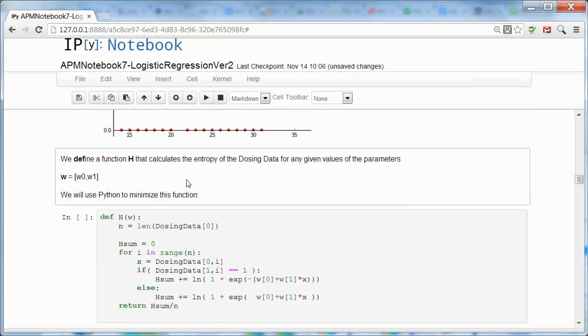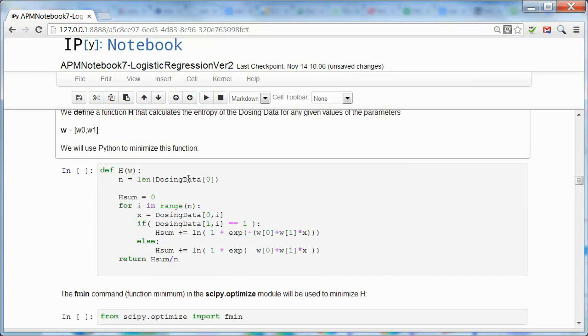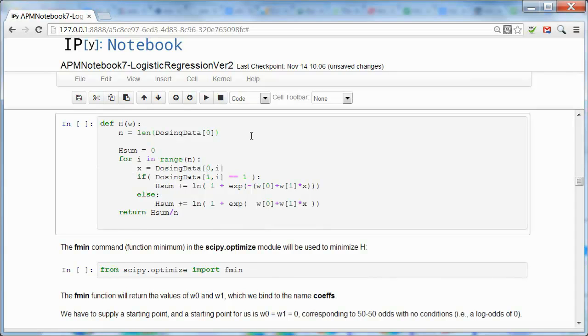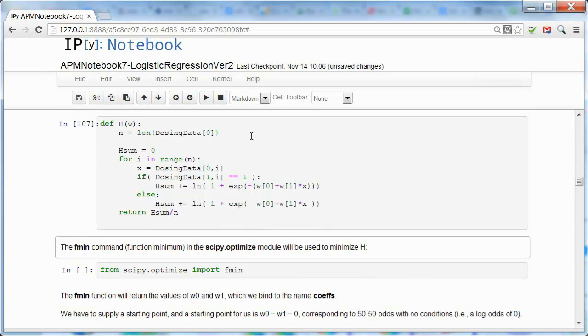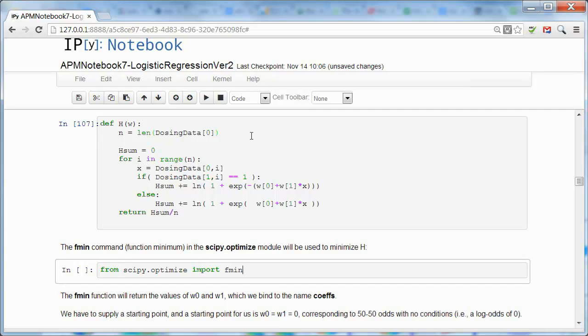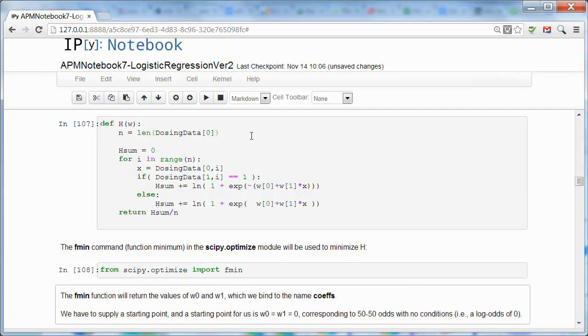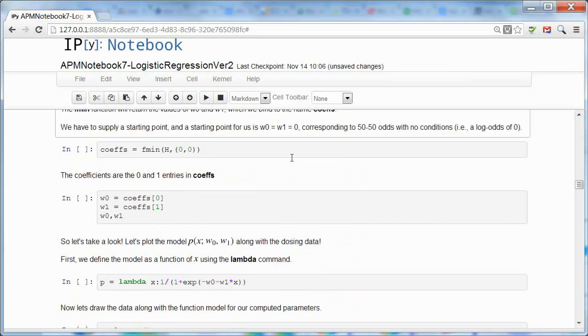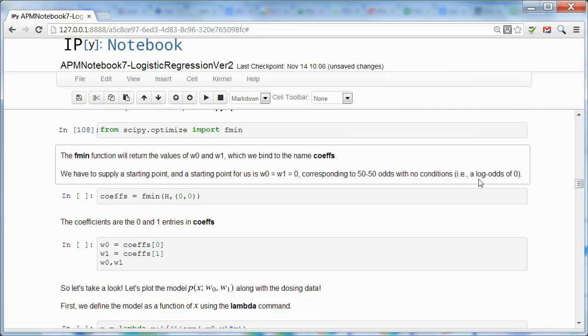So what we want to do now is we want to define the entropy as a function that for each choice of the w0, w1 gives us an entropy. Then we want to use the Fmin function in SciPyOptimize. And we're going to apply that to H.